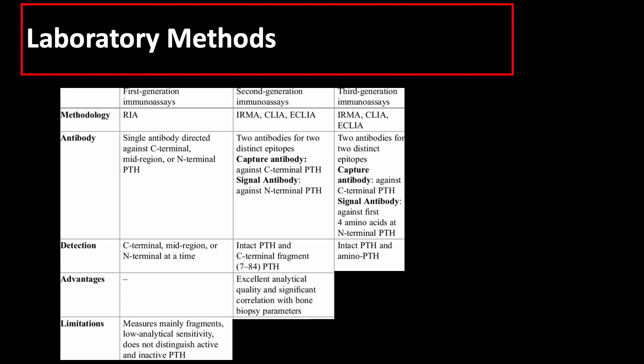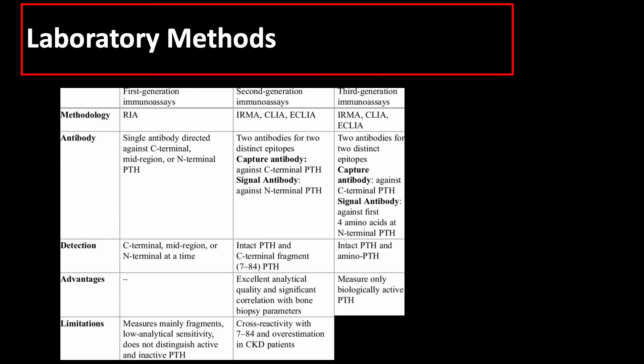The advantage of second-generation immunoassay is excellent analytical quality and significant correlation with bone biopsy parameters. The disadvantage is cross-reactivity with the 7-84 fragment and overestimation in patients with chronic kidney disease. The main advantage of third-generation immunoassay is that it measures only biologically active parathyroid hormone, although it has no major superiority over second-generation immunoassay.